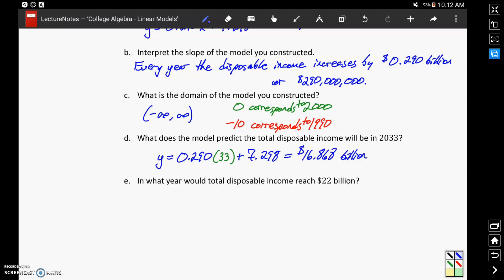And then we're asked, in what year would the total disposable income reach 22 billion? So we can also plug in a value for Y and use that to determine the value for X that would correspond to it. So plugging in Y equals 22 and solving for X would give us X is equal to 50.7 or approximately 51. So that would mean in the year 2051, we would expect to see that disposable income reach 22 billion dollars.